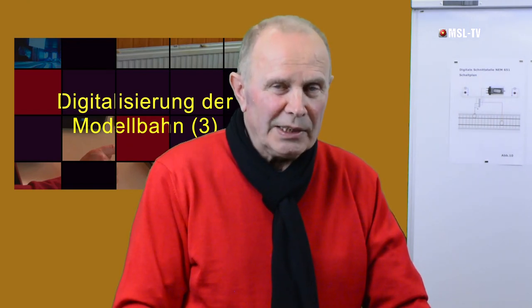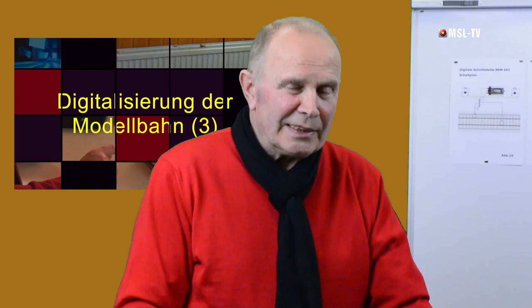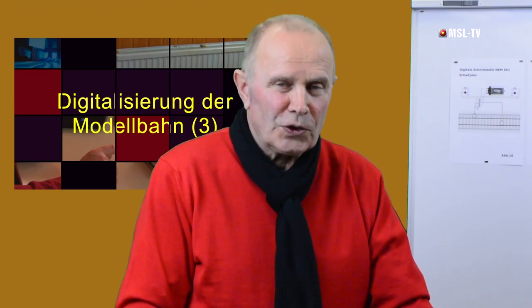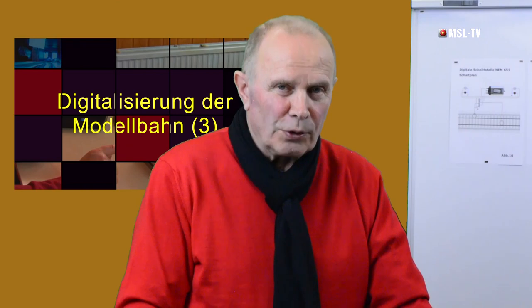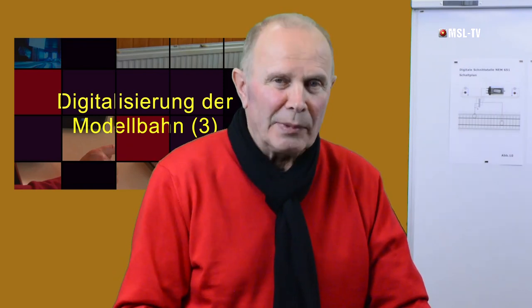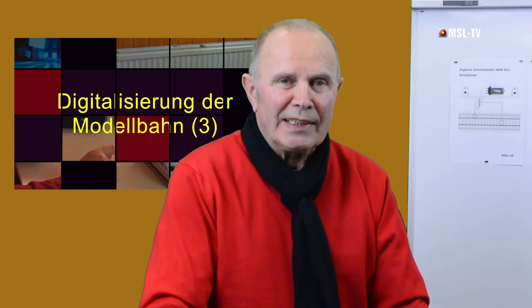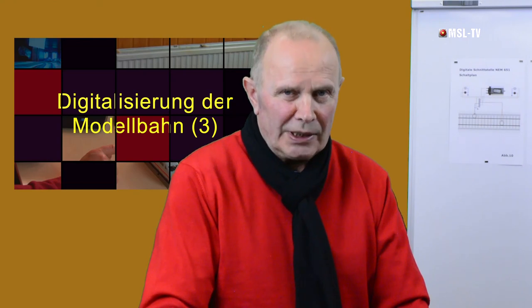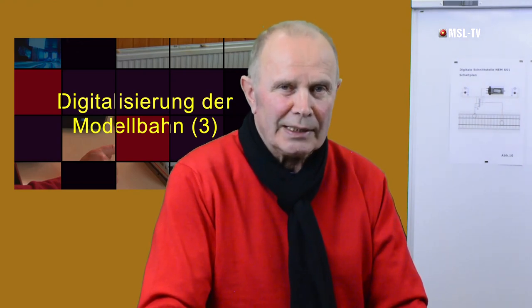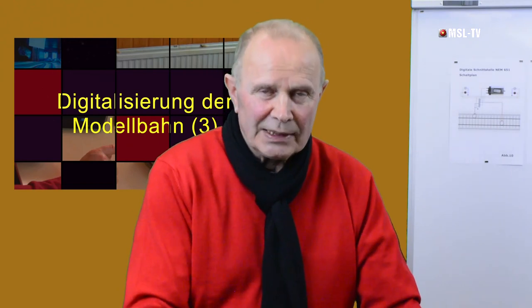Gut, soviel zu den Decodern. Aber wir bleiben auch noch bei den Decodern. Denn der Decoder ist nicht nur dazu da, die Geschwindigkeiten der Lok zu ändern oder Funktionen zu schalten – wir können noch viel mehr machen. Wir können 1024 Einstellungen am Decoder vornehmen, und diese Einstellmöglichkeiten nennen wir im Fachjargon CVs – das heißt Konfigurationsvariablen, also Einstellmöglichkeiten.